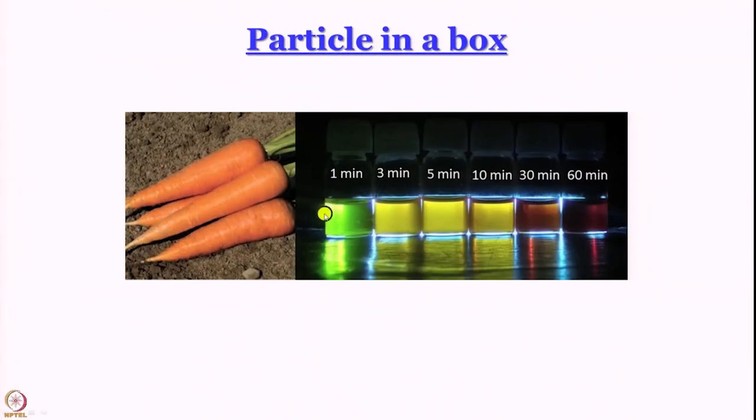Welcome back to the second week of quantum chemistry of atoms and molecules. In the next couple of modules we are going to discuss a rather simple model called particle in a box, which helps us understand several nuances of quantum mechanics. This model also helps us understand the color of carrots and why the color of semiconductor quantum dots — really small nanocrystals of semiconductors — changes upon changing size. But that all in good time.